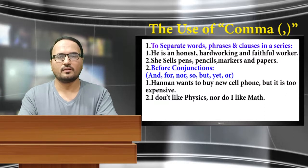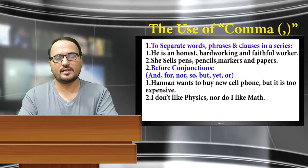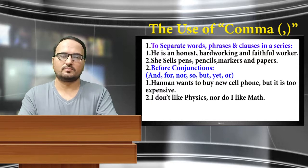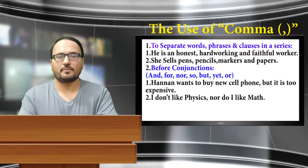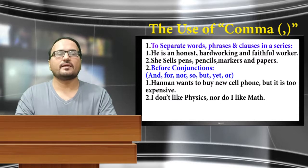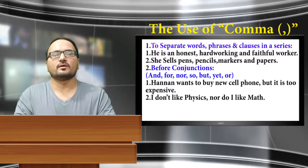The first use of comma — I shall discuss 30 uses of comma in this lecture. The first use of comma: it is used to separate words, phrases, and clauses in a series. Example one: He is an honest, hard-working, and faithful worker. Example two: She sells pens, pencils, markers, and papers.